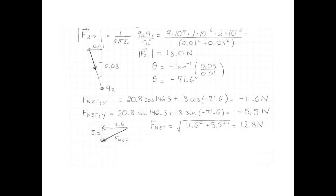We've got our components. Now we need our magnitude and our direction. Always, always, always redraw your new vector when you're figuring out the magnitude and the direction. So we've got 11.6 newtons left, 5.5 newtons down. That's the picture that I've shown you. The magnitude is just the Pythagorean theorem. Square root 11.6 squared plus 5.5 squared. And the magnitude of the net force is 12.8 newtons.